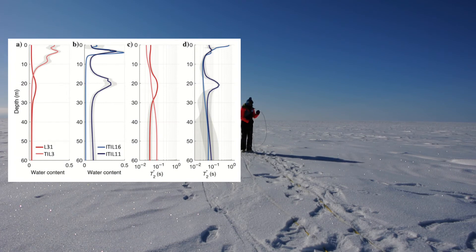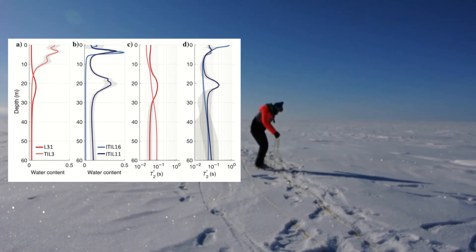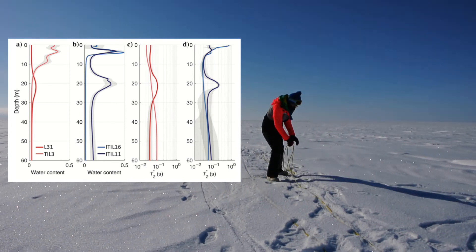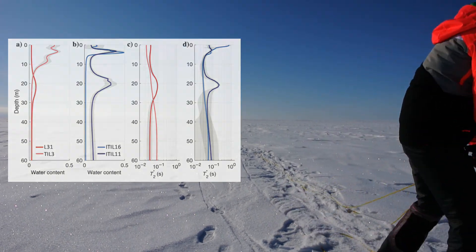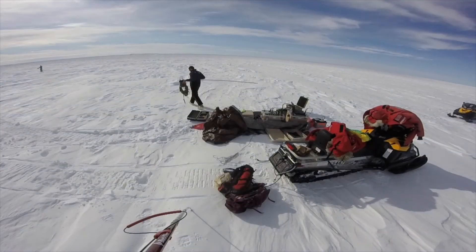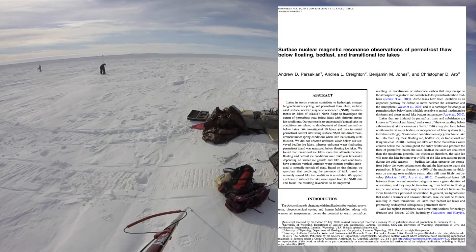The types of results we get from these measurements on lakes can be seen here, with the areas of subsurface with thawed permafrost indicated as elevated water content. To get the background magnetic field strength at each site needed for calculation of the Larmor frequency, we use a proton precession magnetometer as seen here. For more information on these results in NMR and permafrost environments, see this paper published in the journal Geophysics.